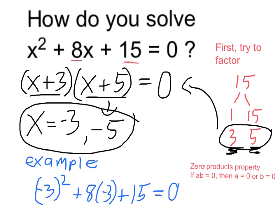Which means, of course, that if I plug either one of these in to my original equation, I get 0. If we look at this, negative 3 squared is negative 3 times negative 3, or 9, plus 8 times negative 3 is like minus 24. 9 minus 24 is negative 15.